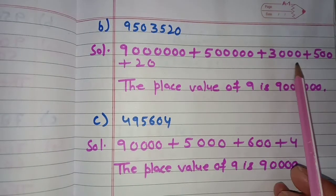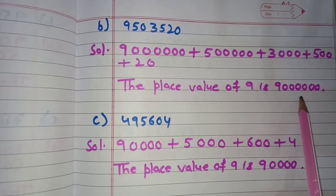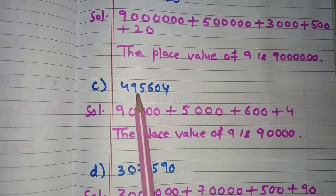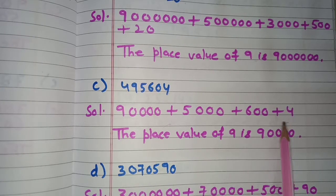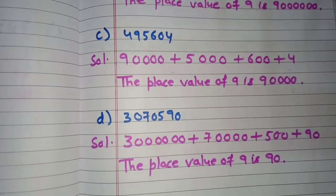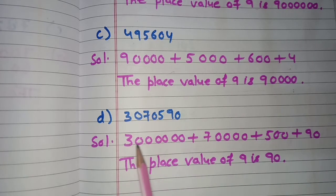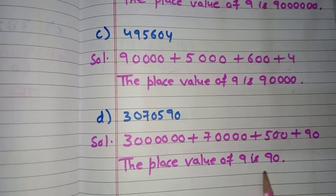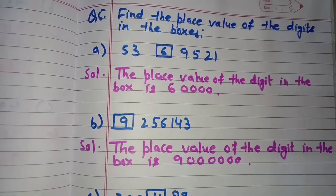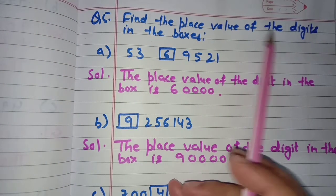Part B is 95,03,520. Write the expanded form first, then the place value of 9 is 90 lakhs. Part C is 4,95,604 — expanded form, then place value of 9 is 90,000. Part D is 30,70,590 — expanded form, then place value of 9 is 90.